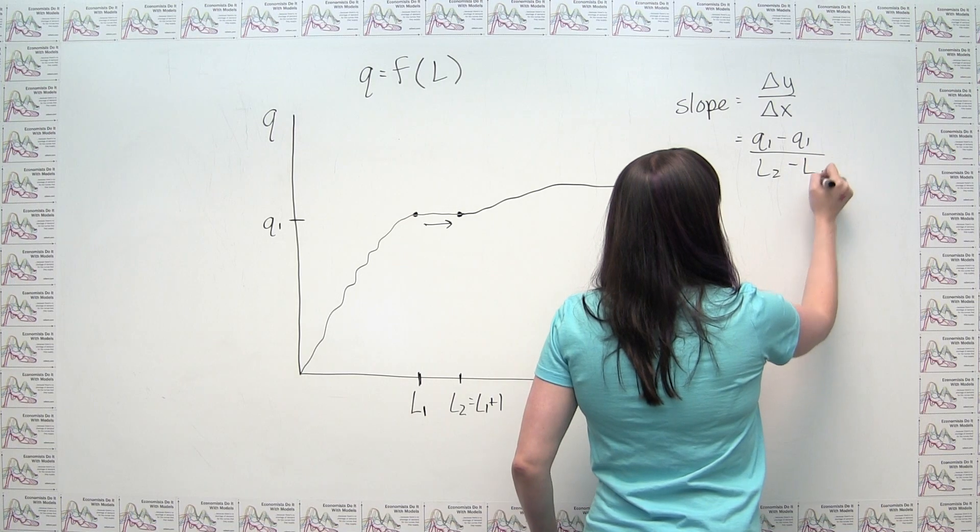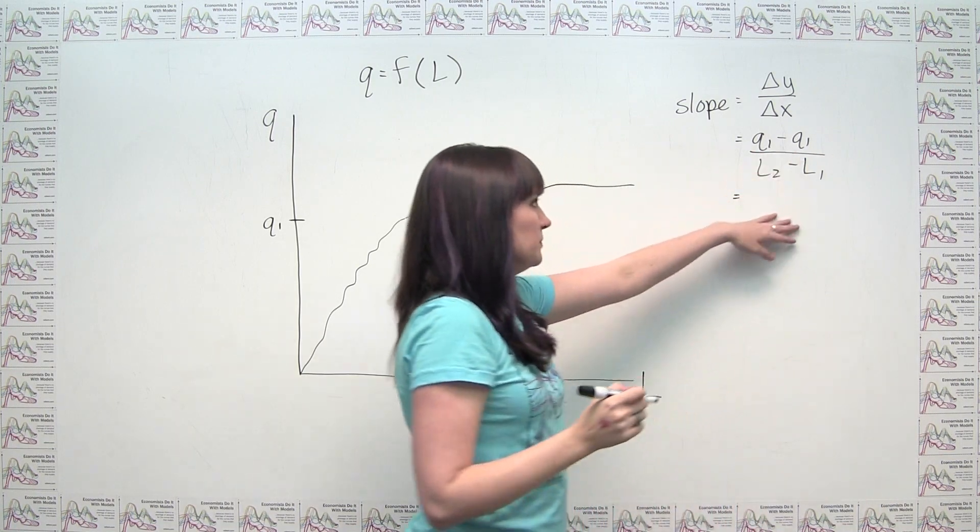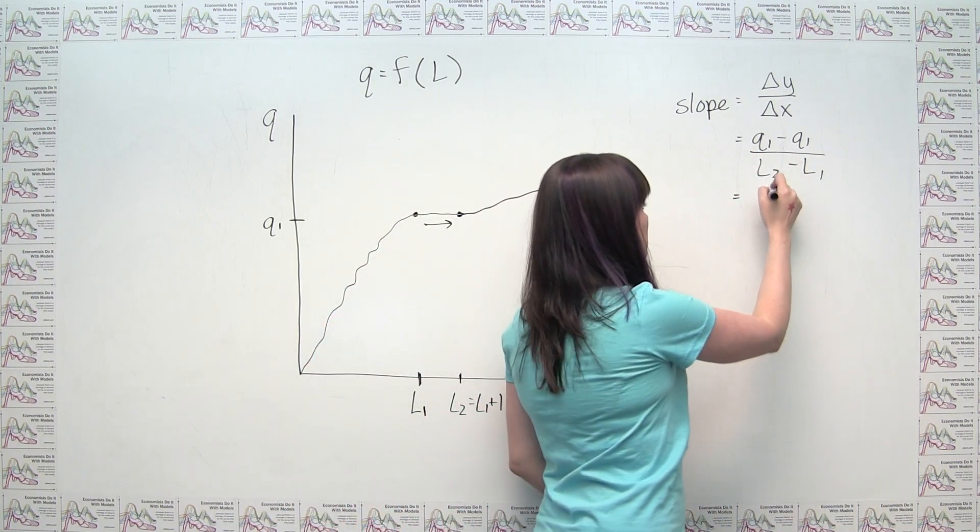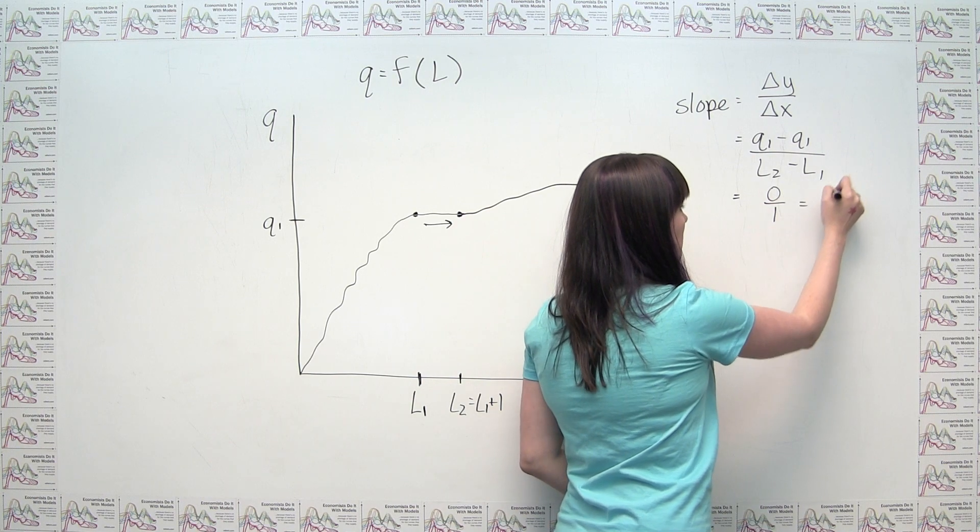Oops, this should be L1. But you'll notice, just doing this, that this is just 0 over 1, which is 0.